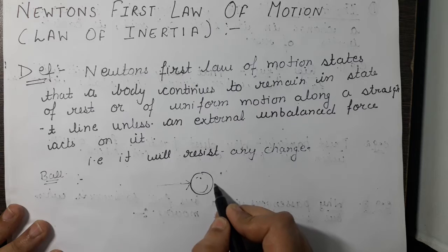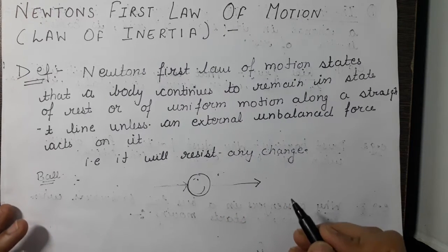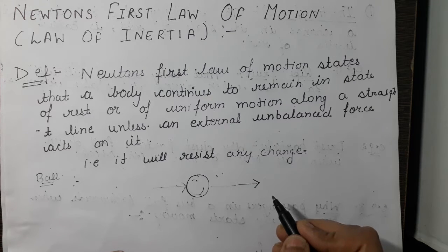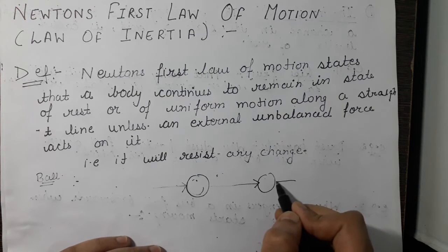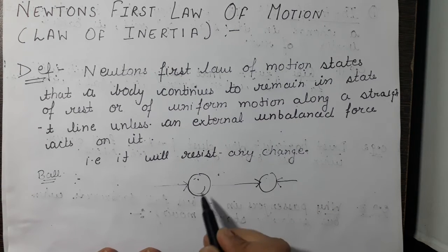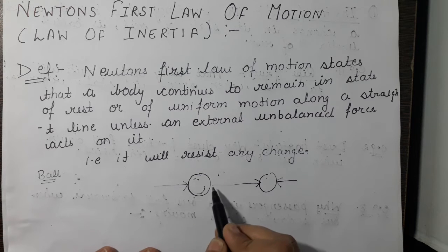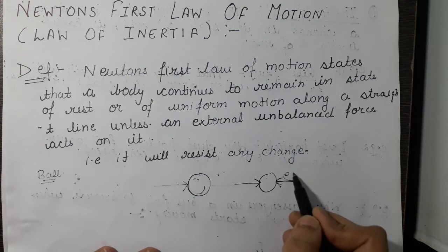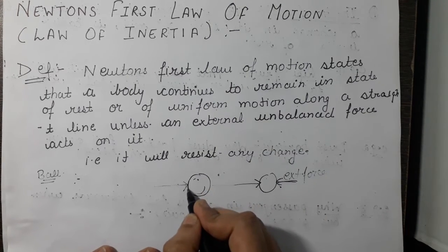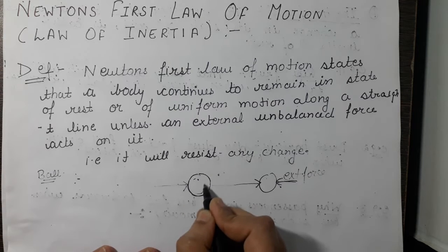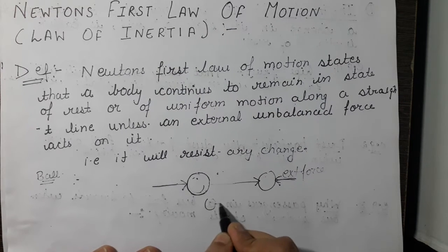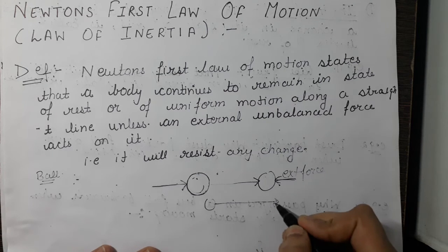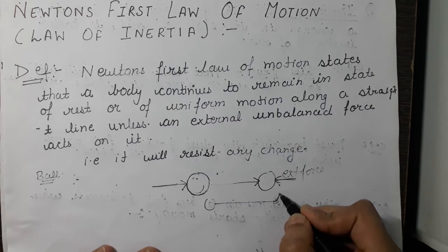Similarly, if the ball is moving continuously, it will come to rest only when some external force acts on it — that force may be the frictional force of the ground or any other force that stops the ball. If it is in motion it will try to remain in motion, and if in rest it will try to remain at rest. If the ball is going in a straight line it will try to remain in that same direction unless we apply some kick or other external force to change its direction.